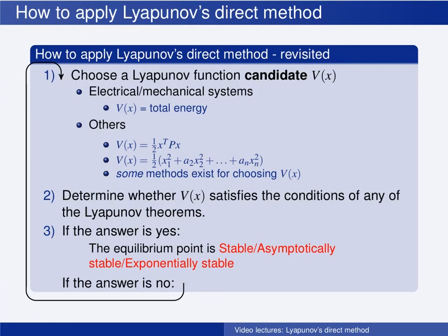To sum up all you have learned about Lyapunov's direct method: first choose a Lyapunov function candidate, then determine whether it satisfies the conditions of the Lyapunov stability theorem (4.1), the global Lyapunov stability theorem (4.2), or the Lyapunov theorem for exponential stability (4.10). If yes, you have proven a certain stability property — stability, asymptotic stability, or exponential stability, either local or global. If no, and you have not proven as strong a stability property as you believe the equilibrium point has, then start over with another Lyapunov function candidate.